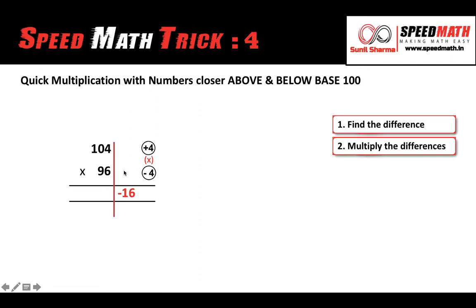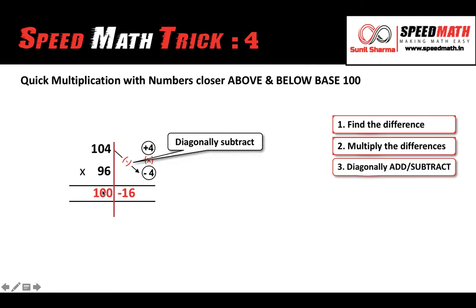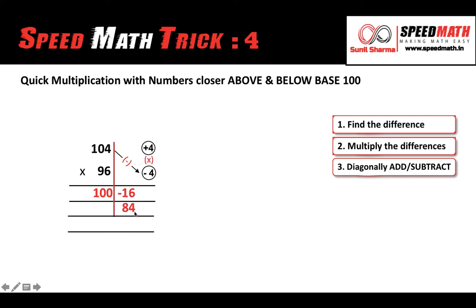Subtracting diagonally: 104 minus 4 gives the left-hand side of the answer, which is 100. Now to convert this negative right-hand side into positive, we take the difference of this number with the base — using the trick from the previous video: all from 9 and last from 10. So I subtract 1 from 9 to get 8, and 6 from 10 to get 4, giving me 84 very quickly. That's the right-hand side part of the answer.